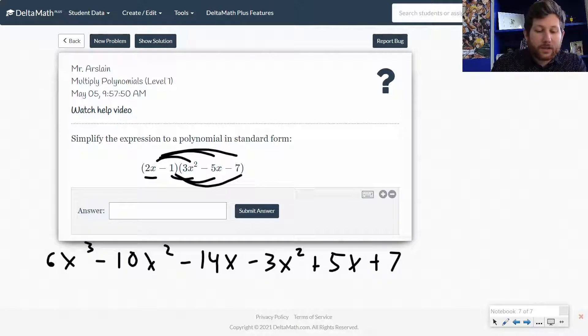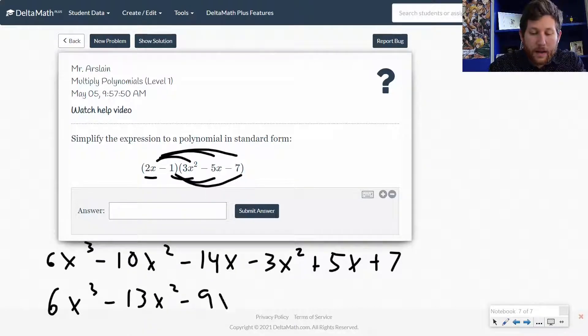All right, now let's go ahead and combine these. We've got 6x cubed, negative 10x squared minus 3x squared is minus 13x squared, negative 14x plus 5x is negative 9x plus 7.